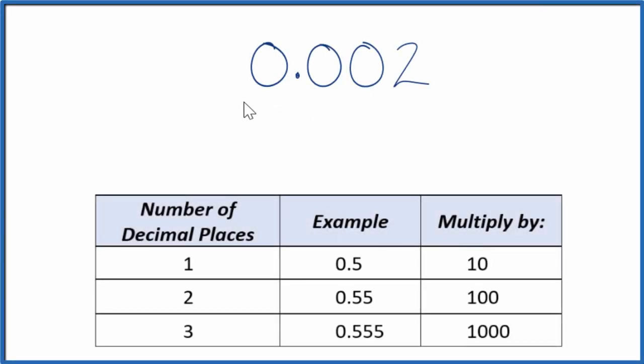Let's convert the decimal 0.002 to a fraction. First off, let's just consider this 0.002 over 1. It has the same value but now we have the start of a fraction.